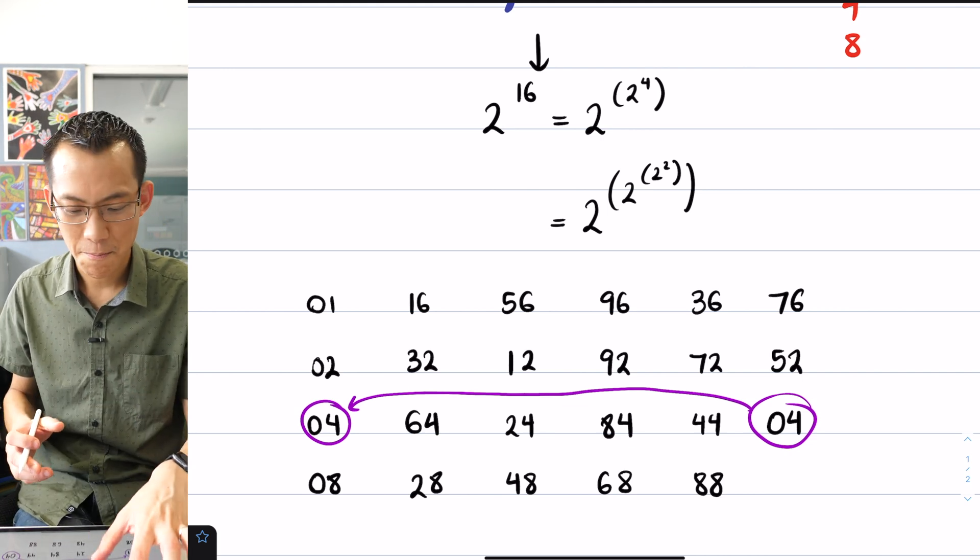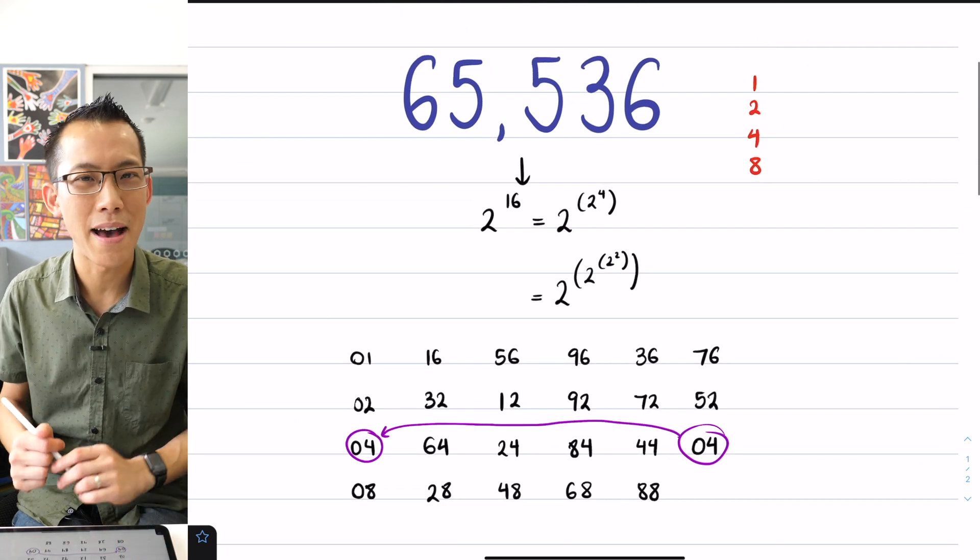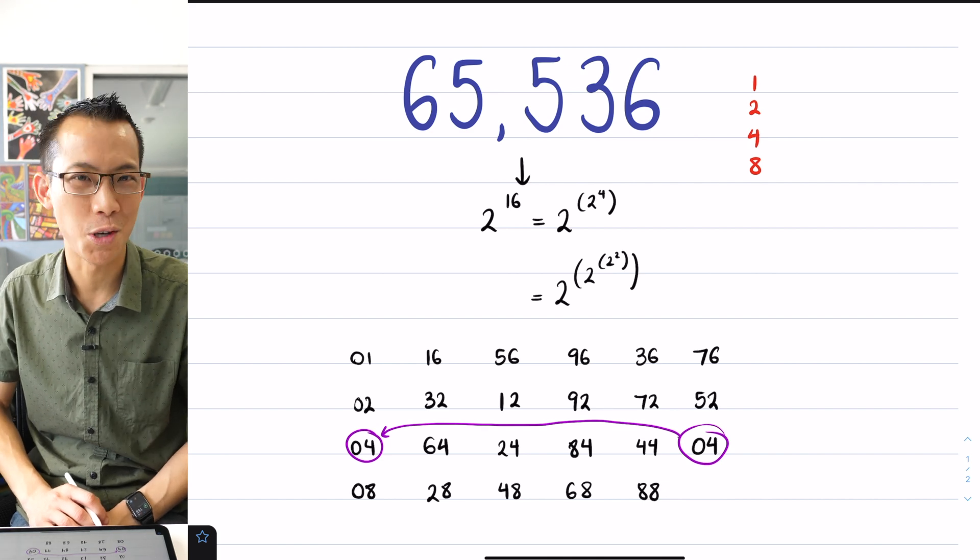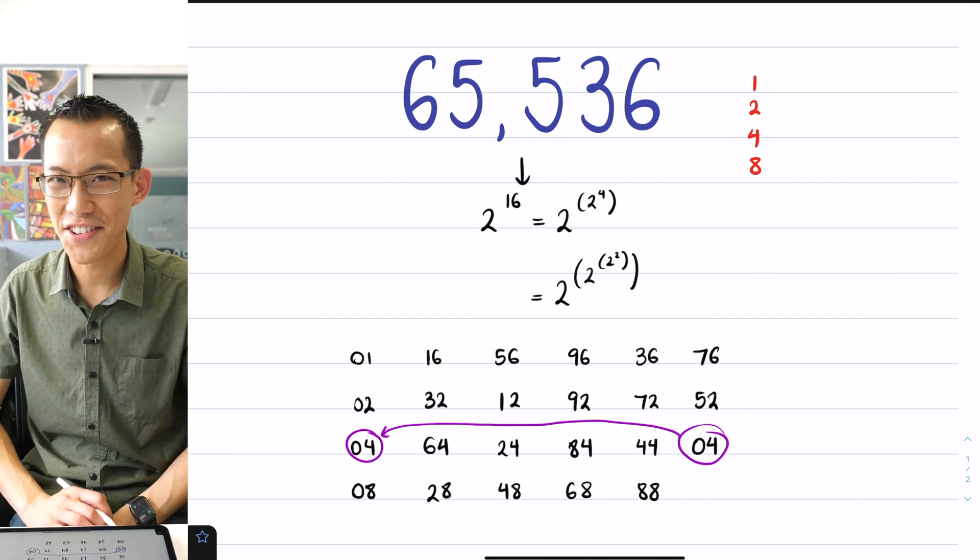But despite that predictability, we still have not found any other powers of two which don't have powers of two in the digits. And I think that's cute. So 65,536.